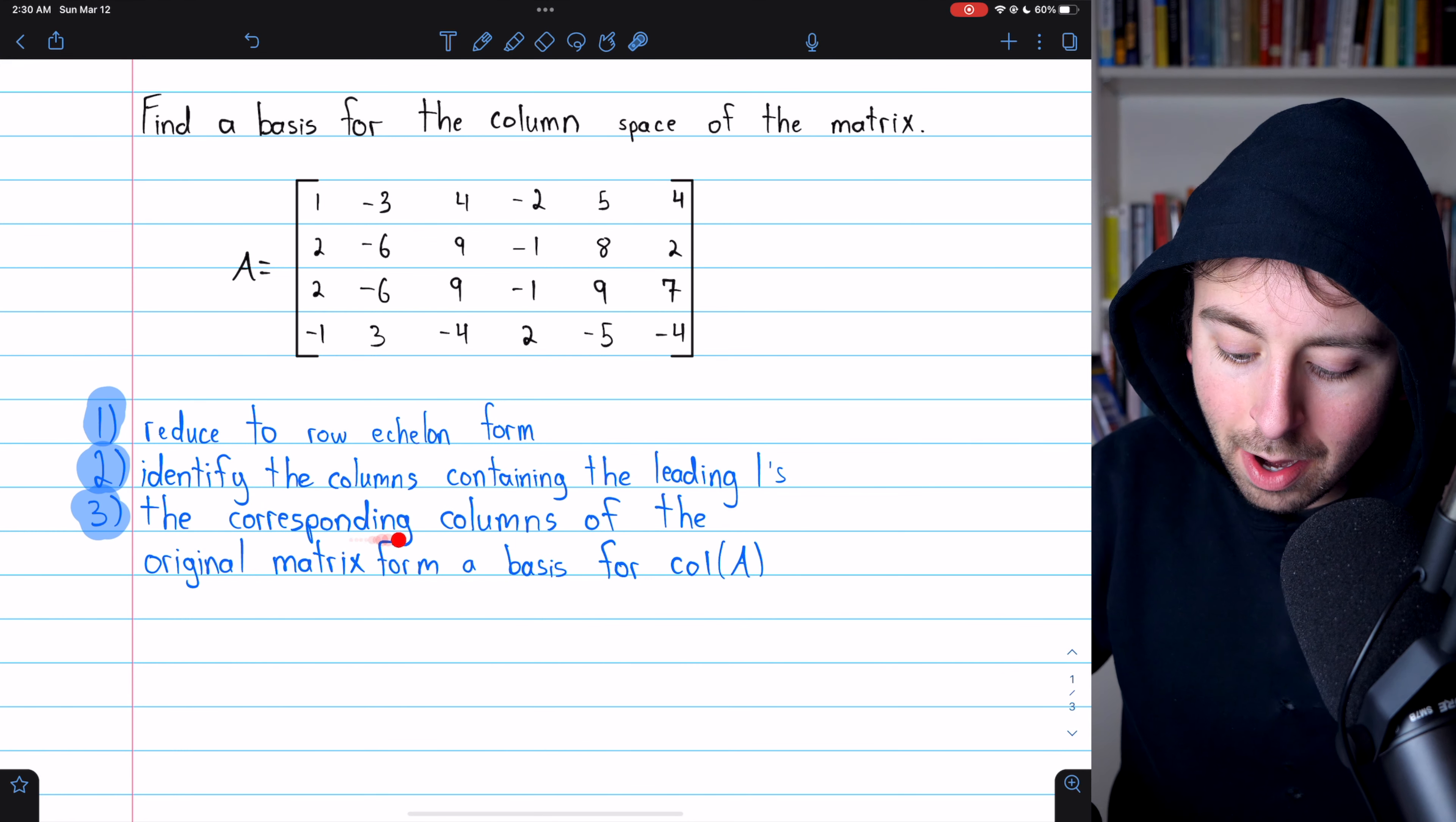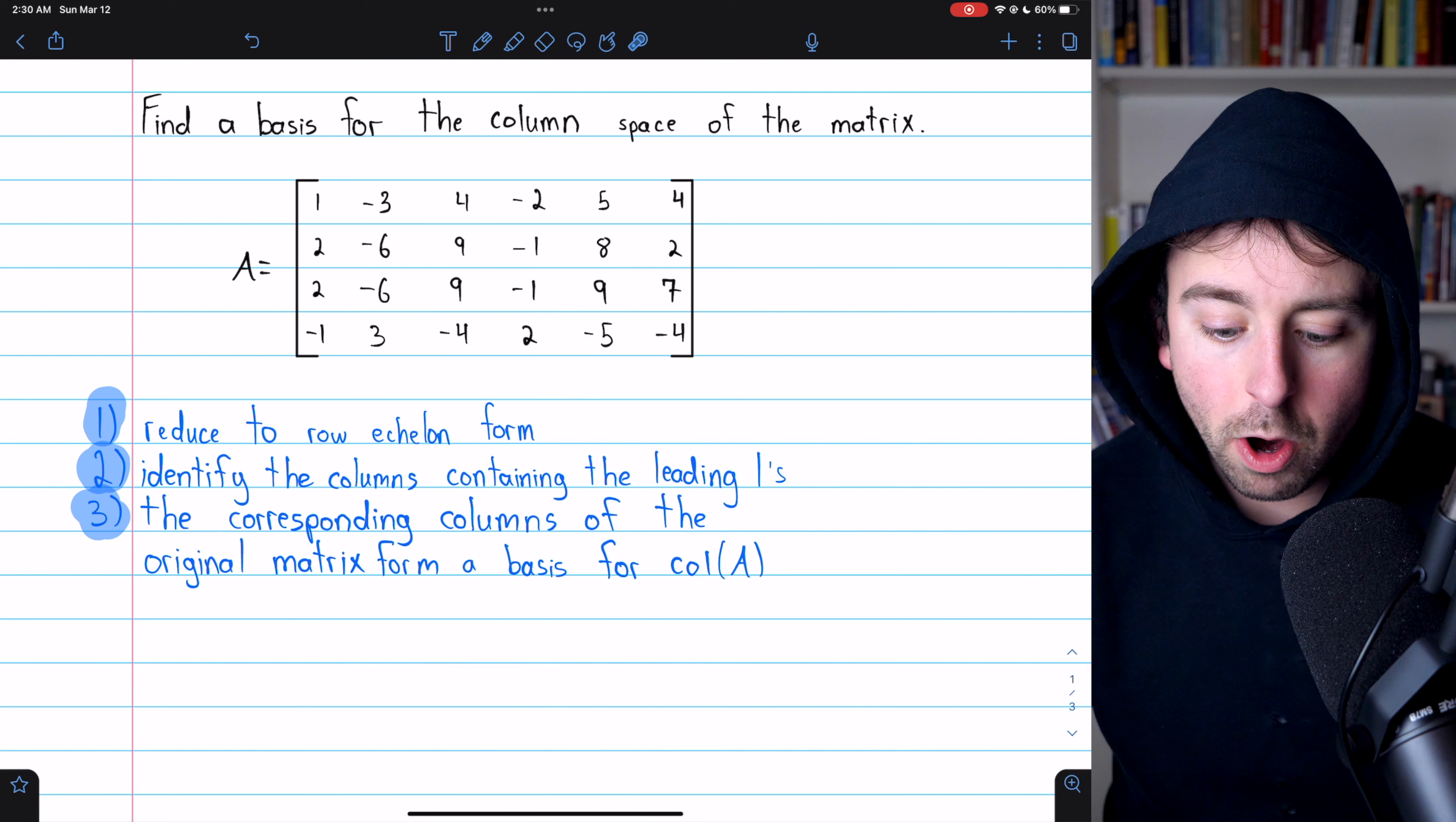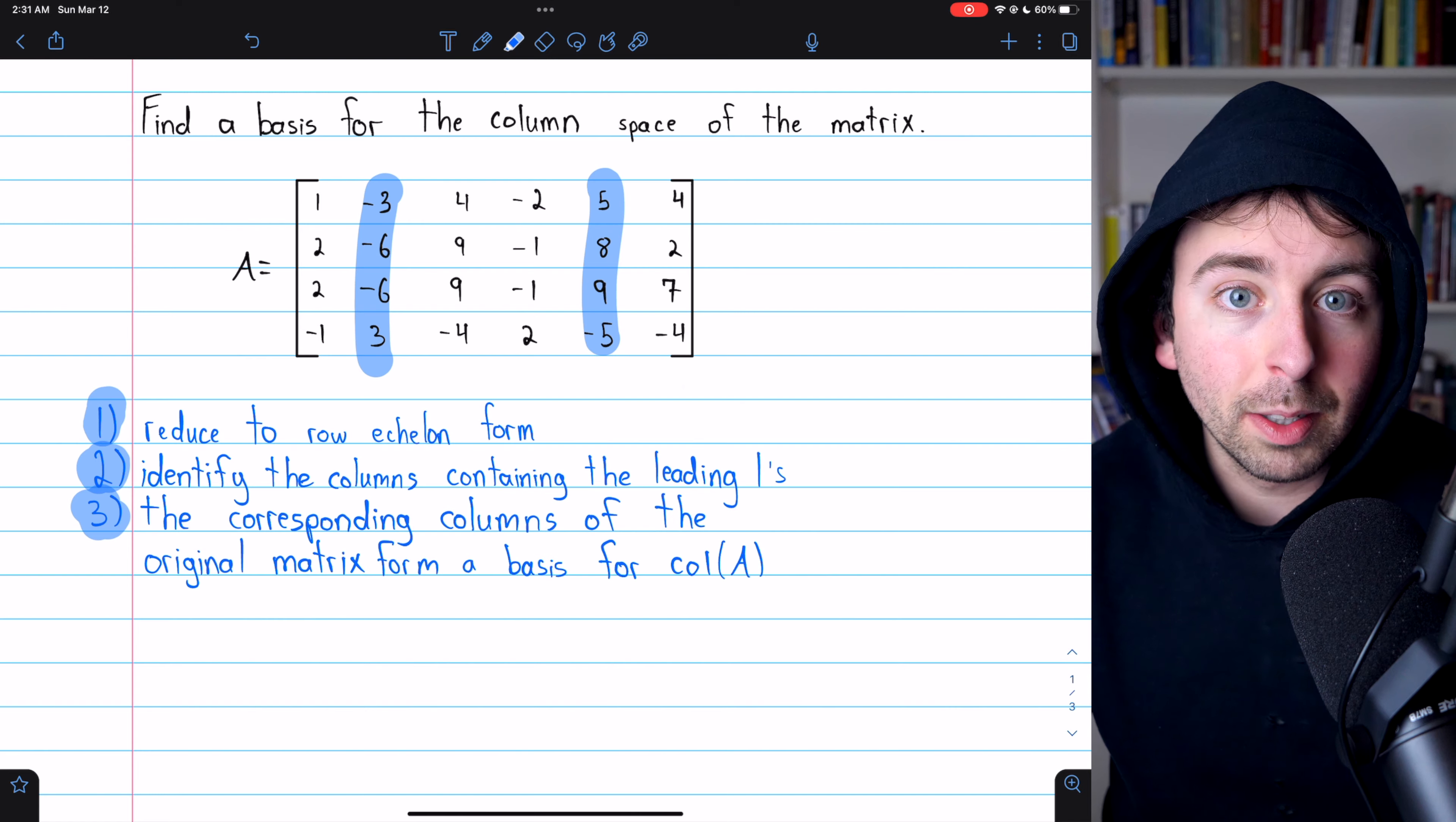Then, the corresponding columns of the original matrix will form a basis for its column space. So if in the row echelon form, say the second and fifth columns contain the leading ones, then it will be the second and fifth columns of our original matrix that form a basis for the column space.